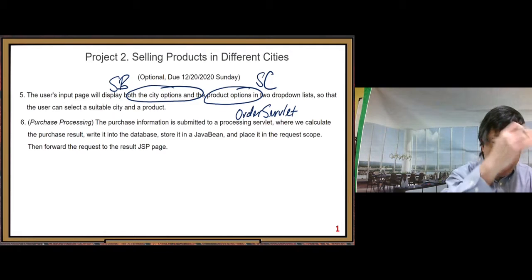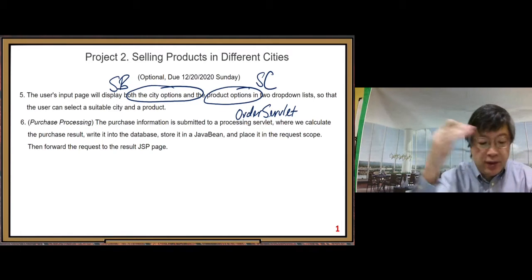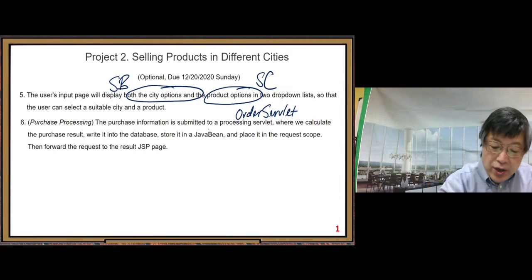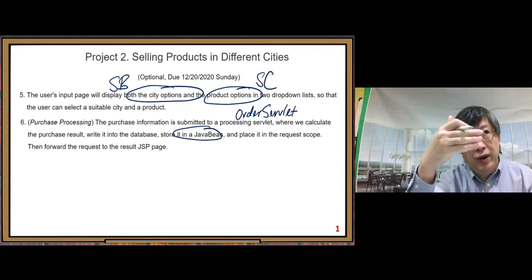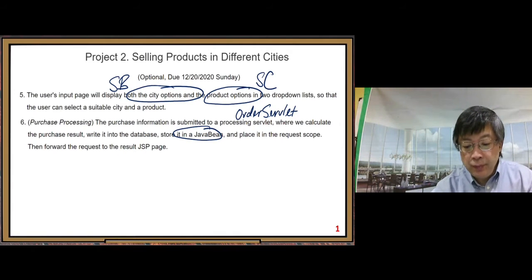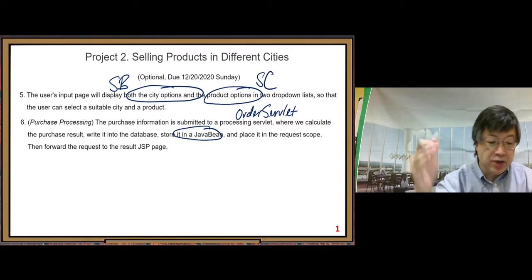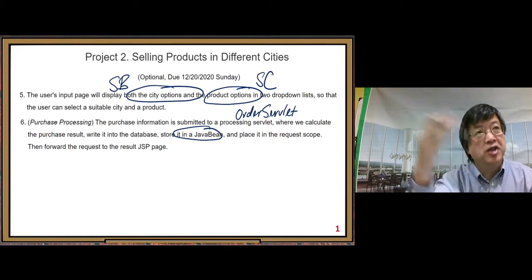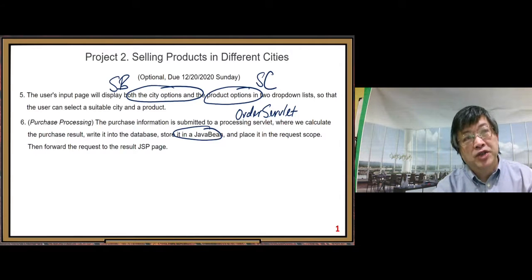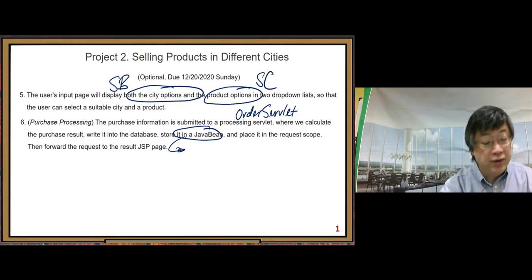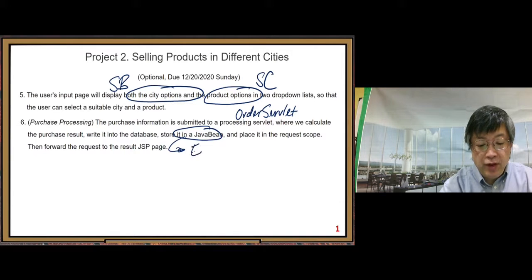In the order servlet we calculate the purchase result, write it into the database, and store it in a Java bean. We need to create a new Java bean to store the purchase result order information, and place it in request scope. Then we forward the request to the result JSP, where we display the purchase result using that Java bean stored in request scope through EL.